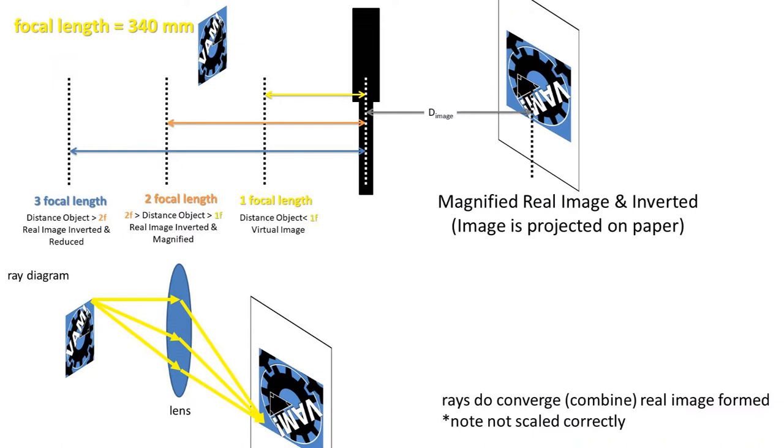If the object is placed between two and one focal lengths, the object will be a magnified real image and inverted. Once again, you can see the rays converge so the image can be projected, which makes it a real image.